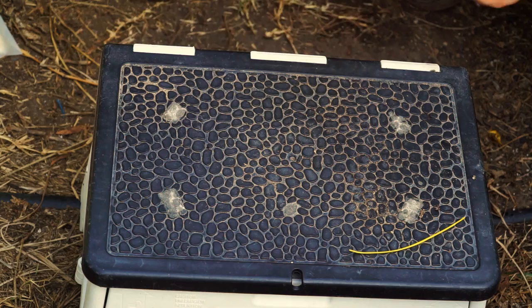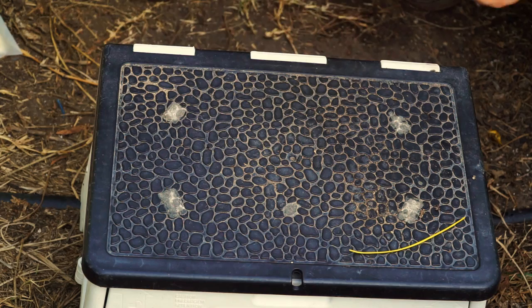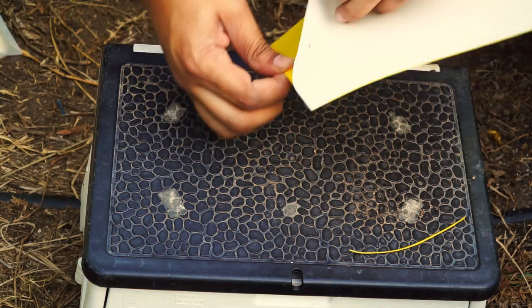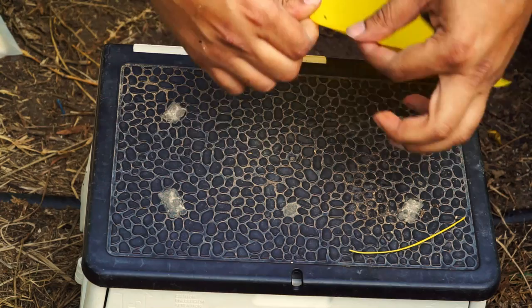The idea is that aphids and white flies get attracted to the yellow color, come and sit on it, and then get stuck to the surface. It provides quite a large surface area.